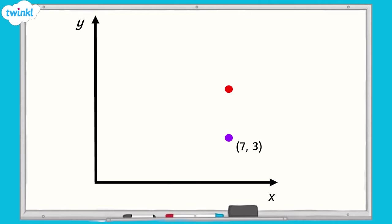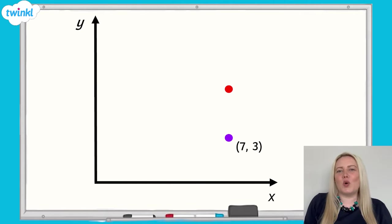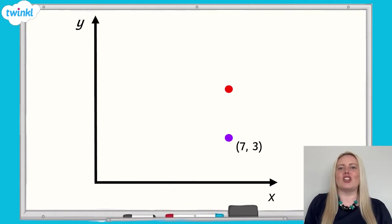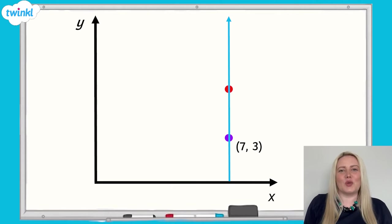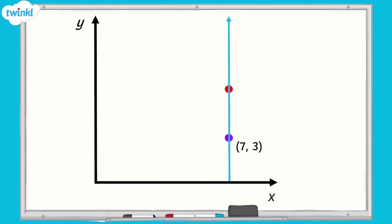In this example, we can see that there are two points shown on the grid: a red point and a purple point. The purple point has coordinates of 7, 3. How could we find the coordinates of the red point? Look carefully at the points — what do you notice about their positions on the grid? If we look along the x-axis, we can see that the points are in line with each other. This means that both points share the same coordinate on the x-axis, as they are the same distance along the x-axis. The x-axis coordinate of the purple point is 7, which means our red point will also have an x-axis coordinate of 7.